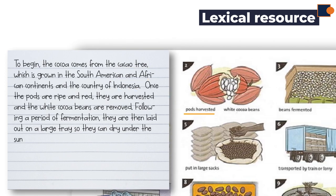The second picture has notes saying 'pods harvested' and 'white cocoa beans.' These are written as 'they are harvested and cocoa beans are removed.' Again, notes are converted into full and meaningful sentences.